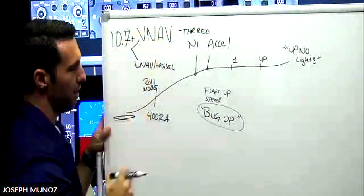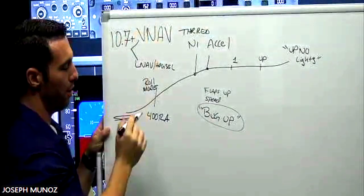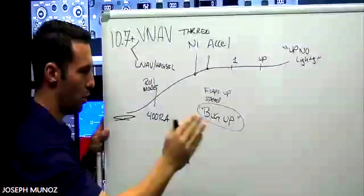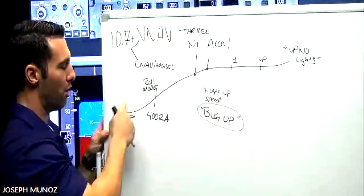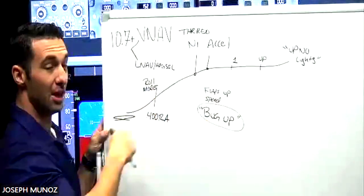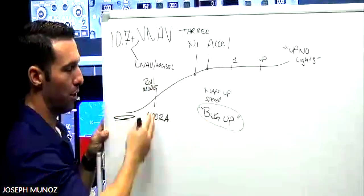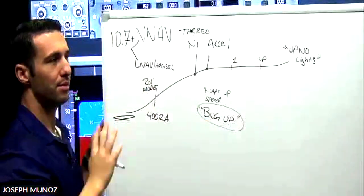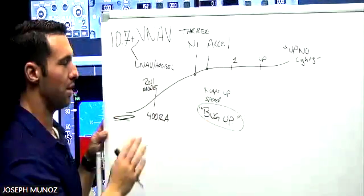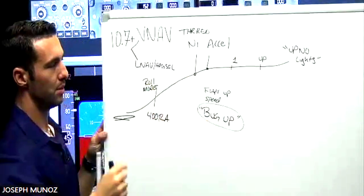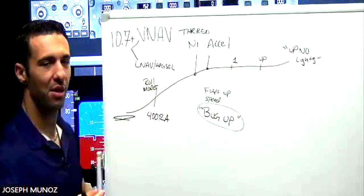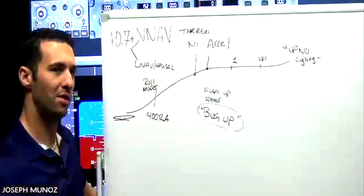So, without looking at LNAV, VNAV for a second, what you should definitively understand is that at 400 feet, you engage a roll mode. Yes, if LNAV was armed off the ground, it will engage itself automatically at 400 feet, leading you to do nothing. But if for whatever reason that didn't work, you're going to have to push it. At 1,000 feet, that altitude is subject to change based on noise abatement procedures, but usually it's 1,000 feet.